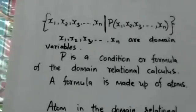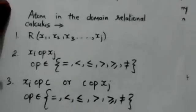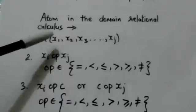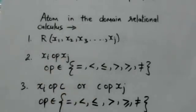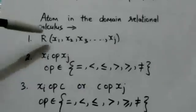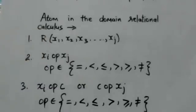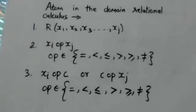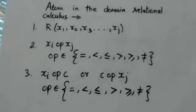A formula is made up of atoms. An atom in the domain relational calculus can be one of the following forms. The first is an atom of this form, where x1, x2, x3 up to xj are domain variables and R is the name of the relation. This atom states that the list of values of x1, x2, x3 up to xj must be a tuple in the relation whose name is R.